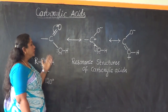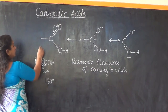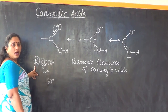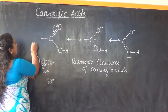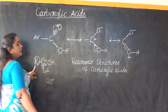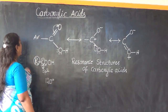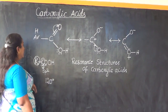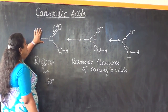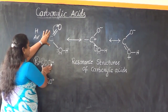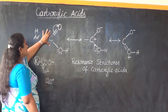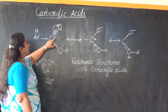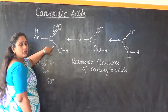The resonating structures are being shown here. This bond is for the attachment of R, which can be an alkyl group, an aryl group, or even hydrogen as in the case of formic acid. The focus is on the COOH portion, where carbon is attached to one oxygen atom by a double covalent bond and to the other oxygen by a single covalent bond.